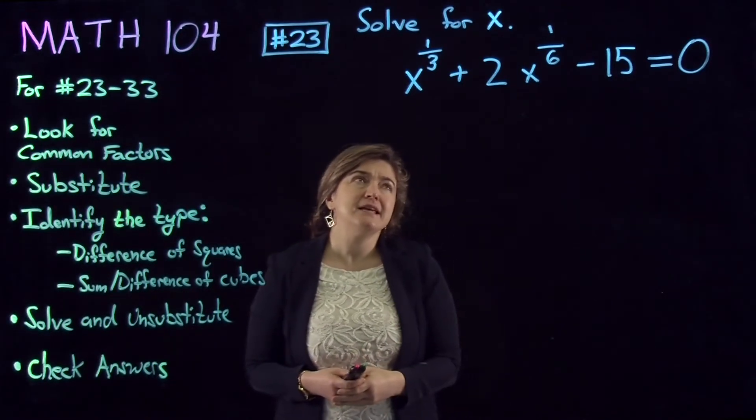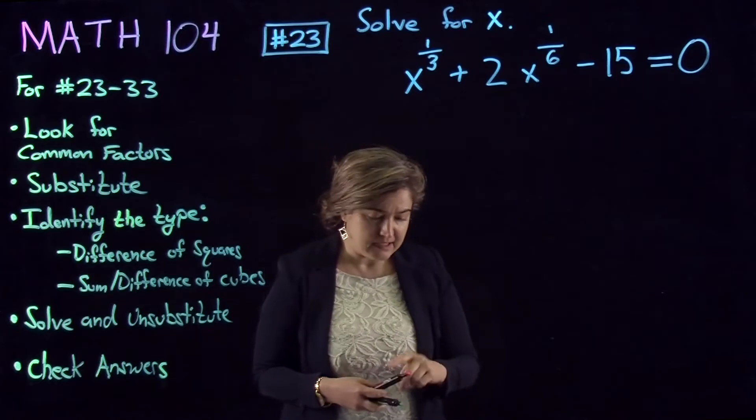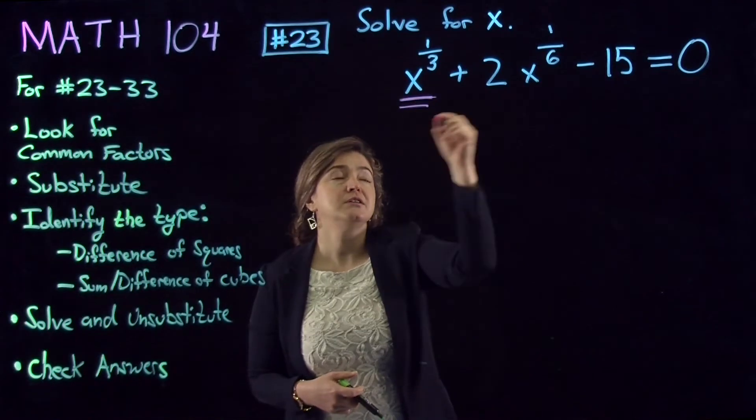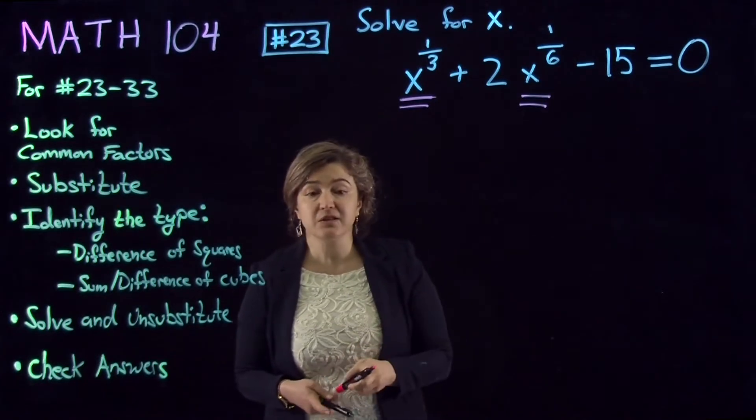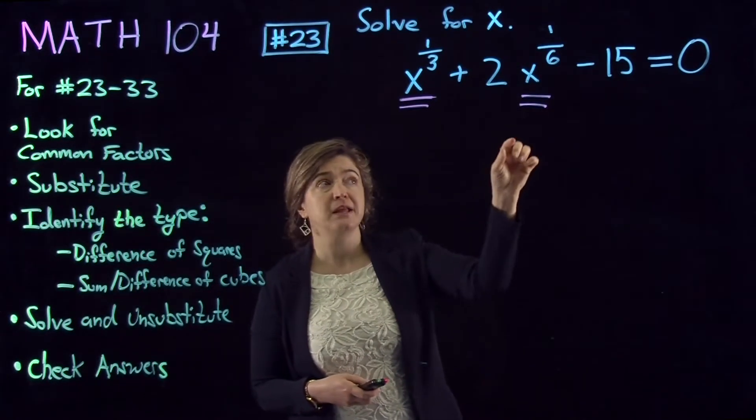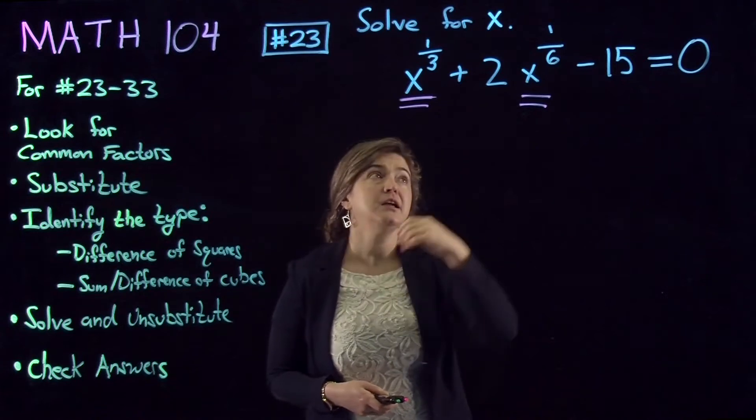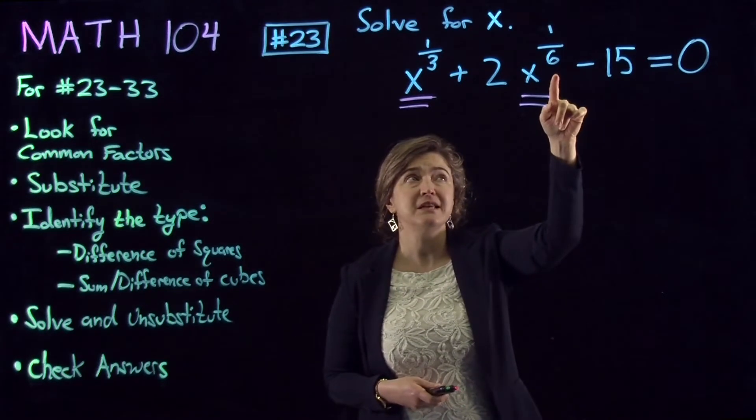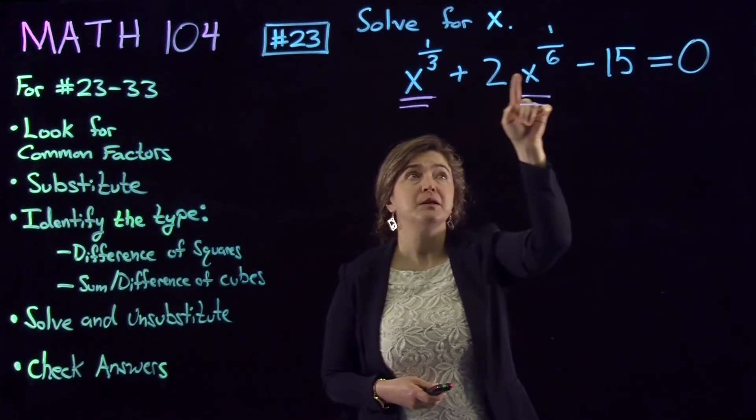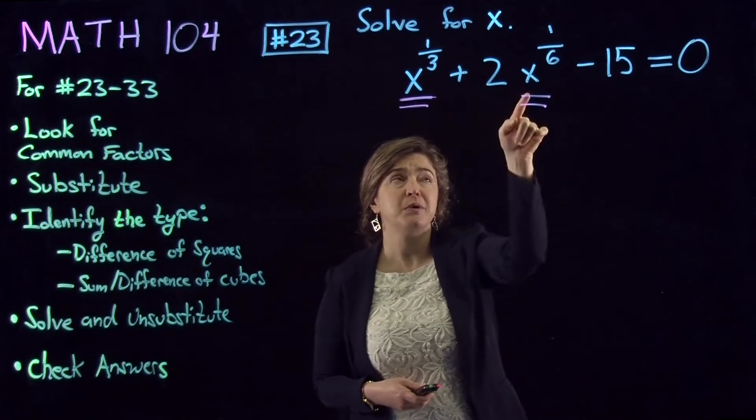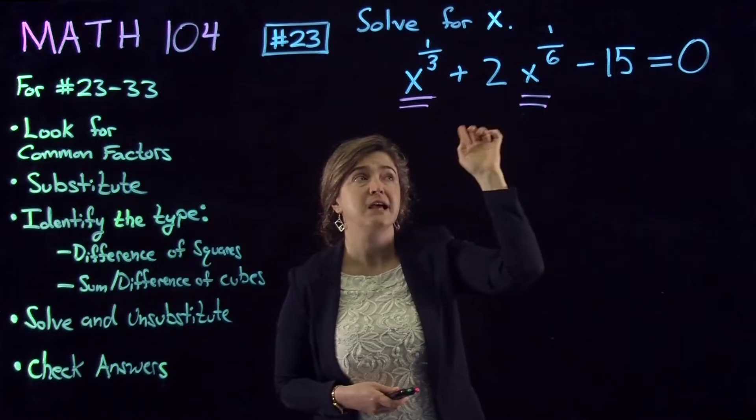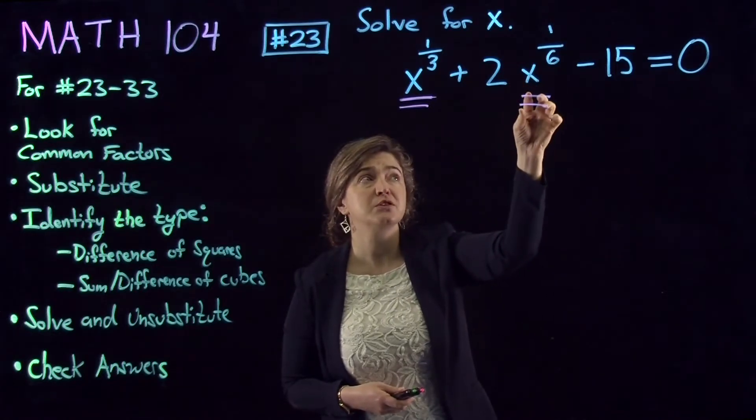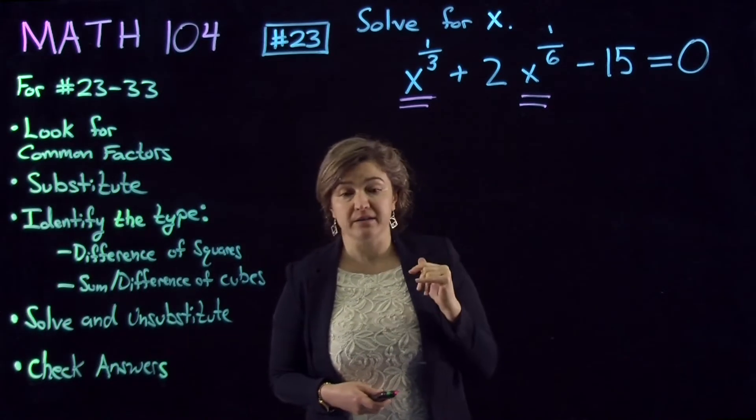In this case, what I notice is x to the power one-third and x to the power one-sixth are the only two types that the variable is appearing. And the relationship between x to the power one-sixth and x to the power one-third is that x to the power one-third is actually x to the power one-sixth squared.